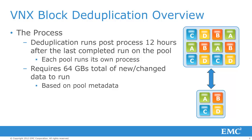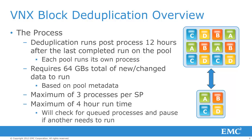A maximum of three deduplication processes may run at a time on each SP. The deduplication process will run for a maximum of four hours. After four hours, the SP will check for queued deduplication processes. If one or more are found, the current deduplication process is paused and another is allowed to run. If there are no queued processes, the deduplication process continues to run on the pool.